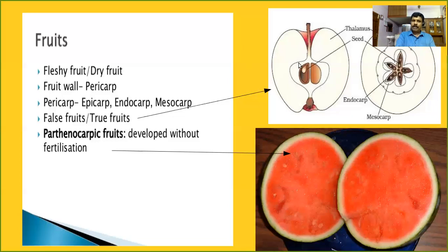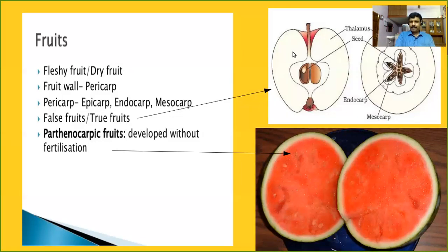Apple and strawberry are considered false fruits. This is a diagrammatic representation of a false fruit — a cross section of an apple. You can see the seed and the ovary region, the ovary wall, and the ovule. The edible part of the apple is actually the thalamus, which contributes to fruit formation. Such fruits are collectively called false fruits.